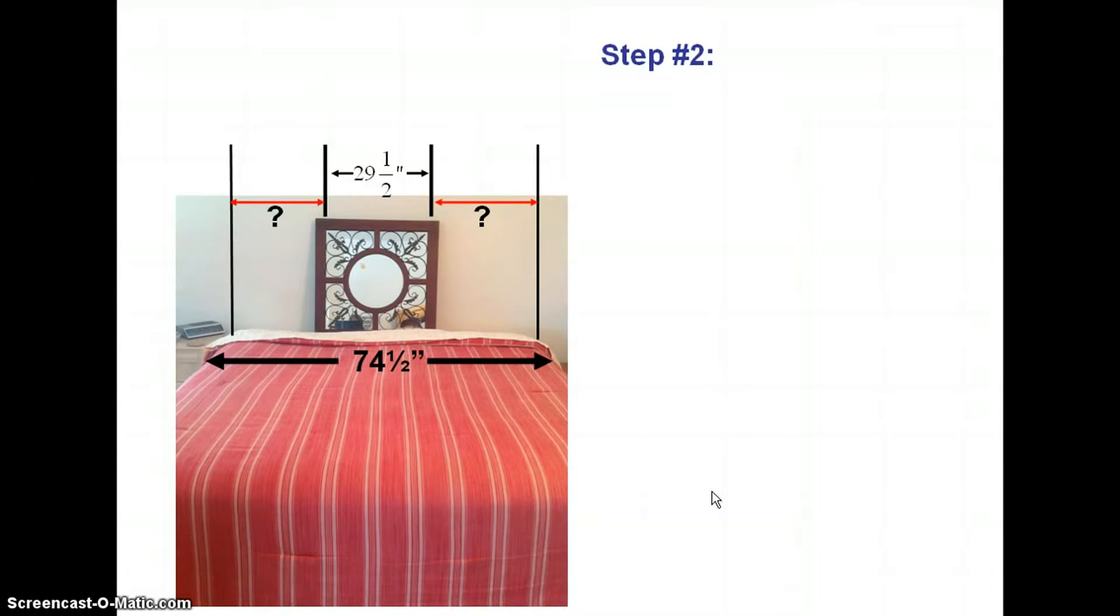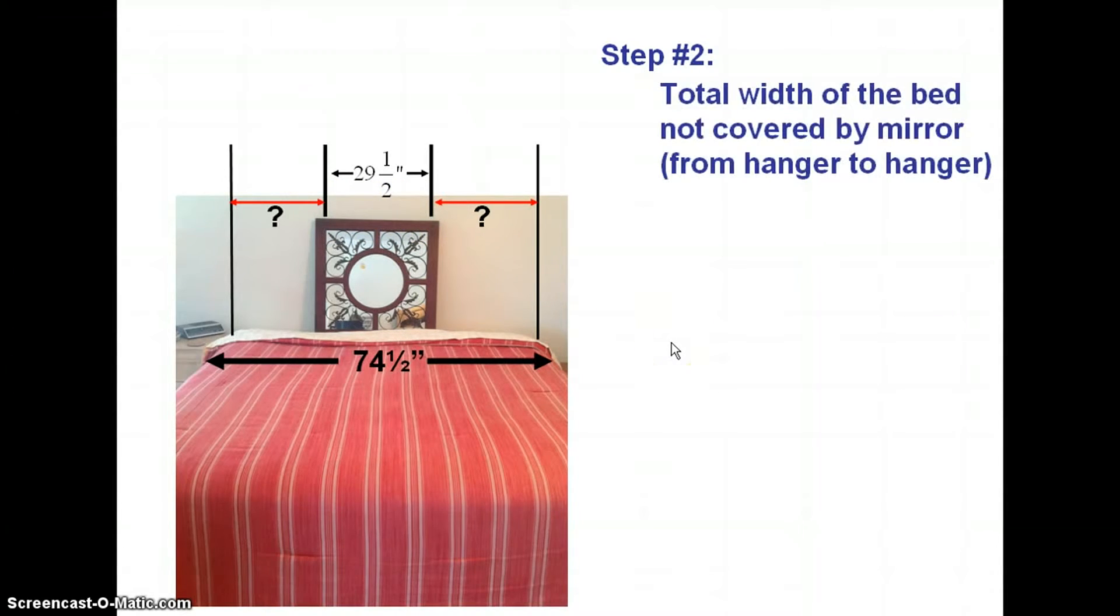So what is step two? What are we going to do first? I know the width of the bed is 74 1/2. The distance from hanger to hanger is 29 1/2. I need to know the total width of the bed not covered by the mirror from hanger to hanger. So what are we going to do? Give me a plan, man. Yeah, let's take the width of the bed and subtract the distance from hanger to hanger. And what we've got left is the total distance from here to here plus here to here not covered by the mirror. So you guys go ahead and do that. Isn't a half subtract a half? Those two halves cancel each other out. So 74 subtract 29 gives you what? Did you get 45 inches? Okay. 45 inches of the 74 1/2 will not be covered by mirror.